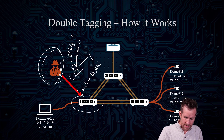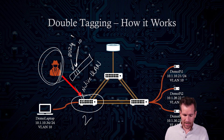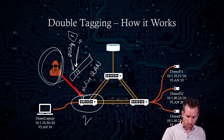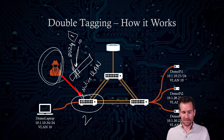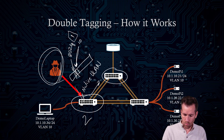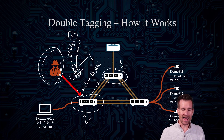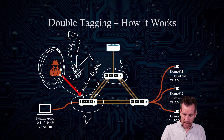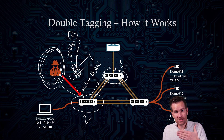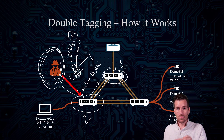Switch 2 receives this frame, sees that it's part of VLAN 1 — the native VLAN — and removes that outer tag, then forwards the rest of the frame onward to Switch 1. Switch 1 receives it with the second tag still intact: VLAN 10. So now the attacker has communicated a frame onto a different VLAN, gaining one-way access to VLAN 10.